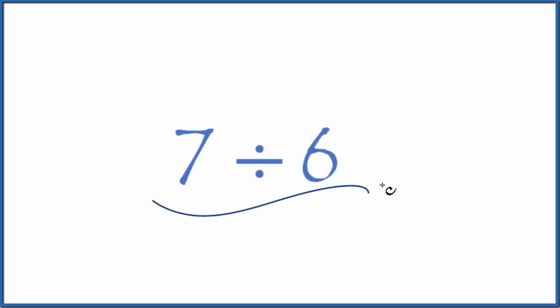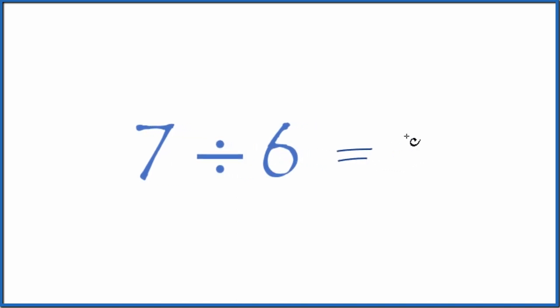Let's divide 7 by 6. So let's think of this as a fraction. 7 divided by 6, that's the same as 7 over 6. So we could think of it as a fraction.